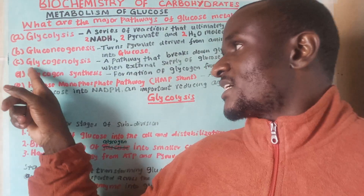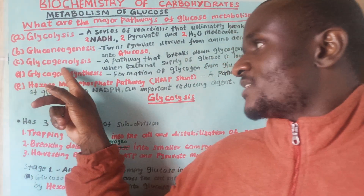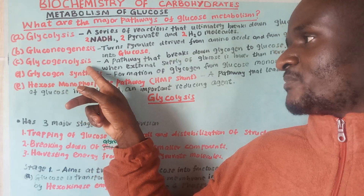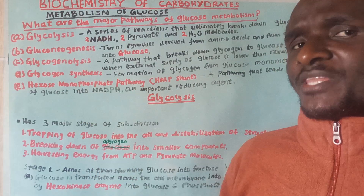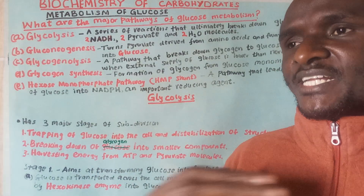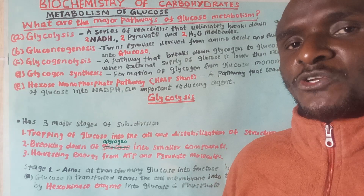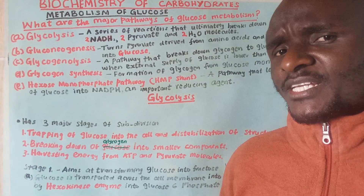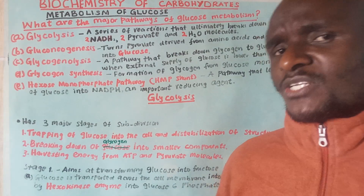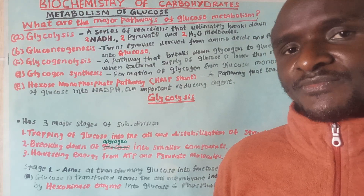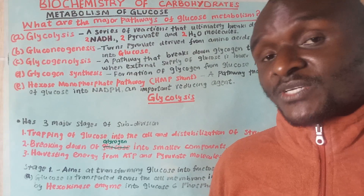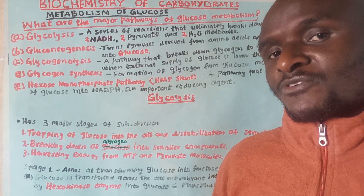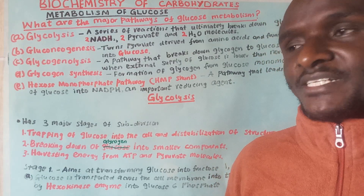Then we have glycogenolysis. From the word 'glycogenolysis' we can see 'glycogen' and 'lysis,' and we have said that lysis means breaking down. So this is a pathway that breaks down glycogen into glucose monomers. This can only happen if the external supply of glucose is lower than the demand.